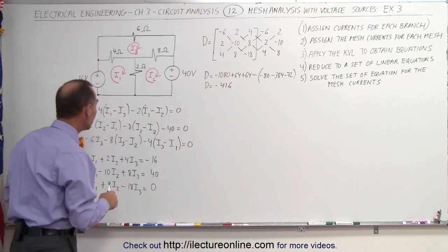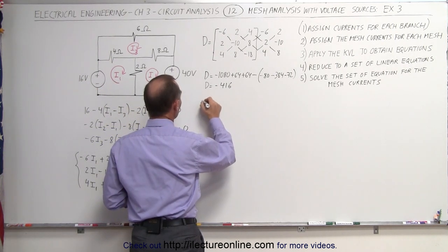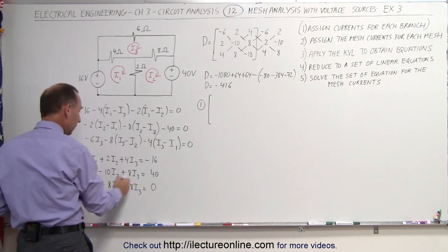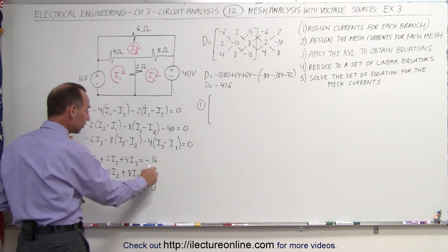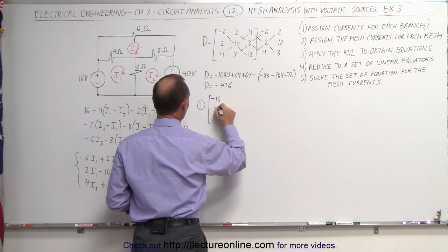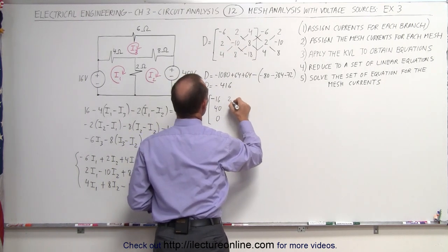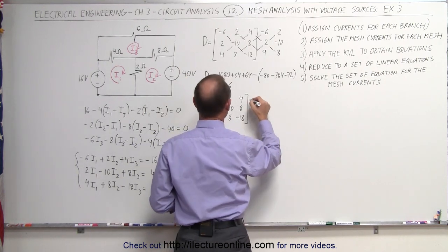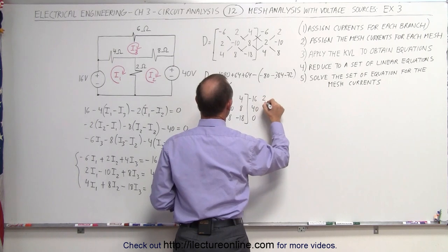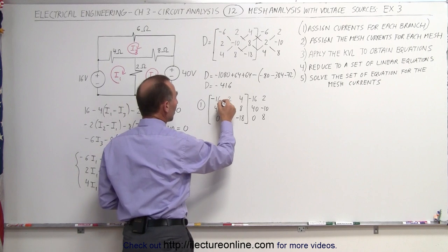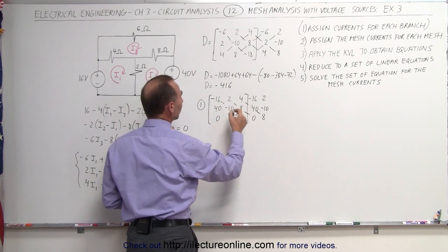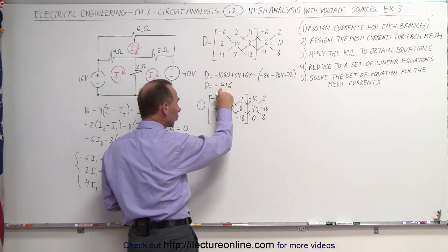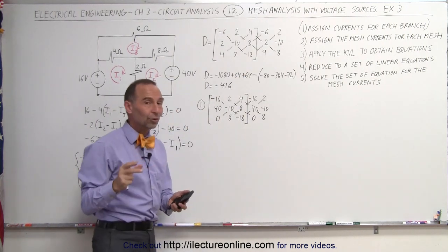Now to find I1, I2, and I3 using Cramer's rule. To find I1, we take the same matrix but replace the first column with the constants from the right side of the equal sign. So instead of minus 6, 2, and 4, we write minus 16, 40, and 0. We keep the other two columns: 2, minus 10, and 8; then 4, 8, and minus 18. We repeat those two columns again, then multiply and subtract the diagonal elements just like before.